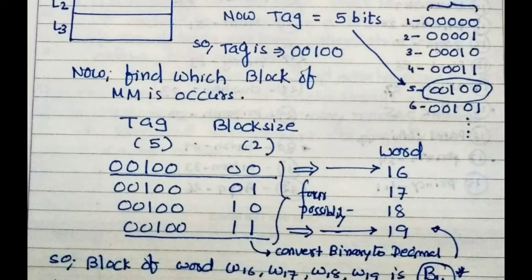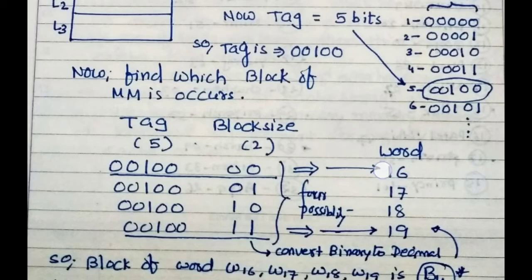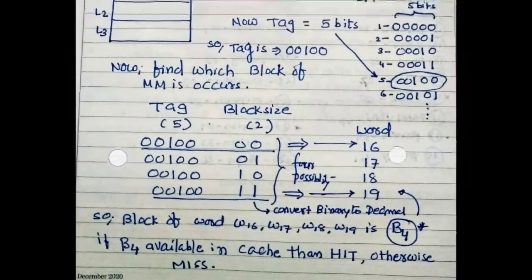The possibilities are 00, 01, 10, 11. So write down 00100 four times with these possibilities. All together 7 bits means 16, 17, 18, 19, converting binary to decimal. So we get W16, W17, W18, and W19. These words are included in main memory block B4.